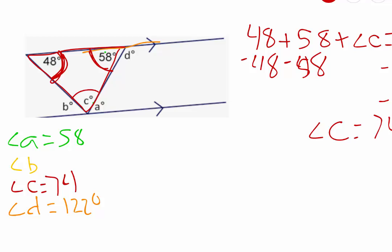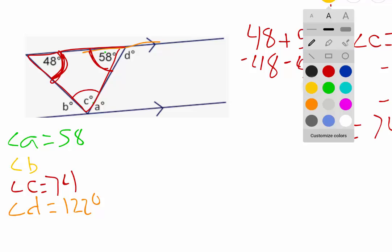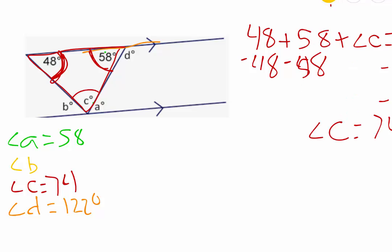So angle C has to be 74 degrees, which can lead us here to getting angle B. If we take a look at angle B right over here, angle B along with angle C and angle A, this forms another straight angle. If we go from this side of the line all the way across, that is a straight angle. So straight angles equal 180 degrees.